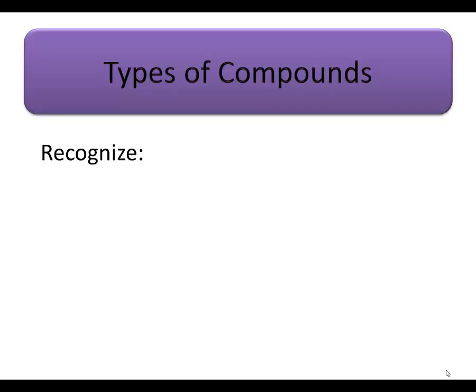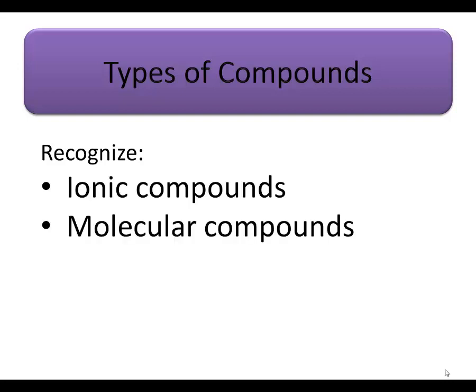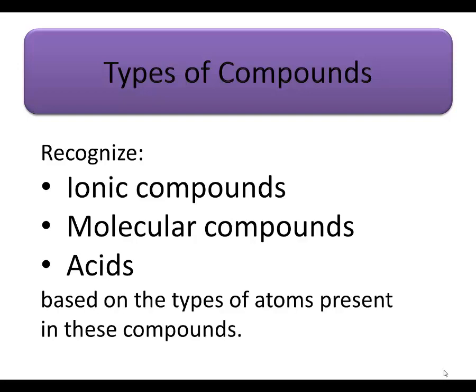In Chem 1251, we place compounds into three different categories. We learn to recognize compounds as ionic, molecular, and acidic.